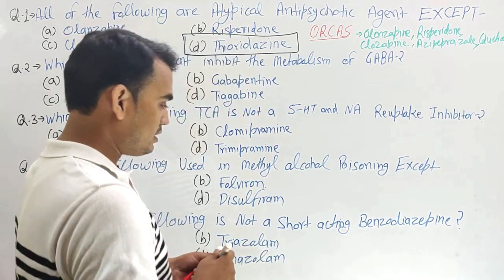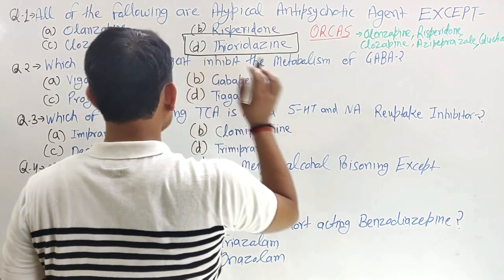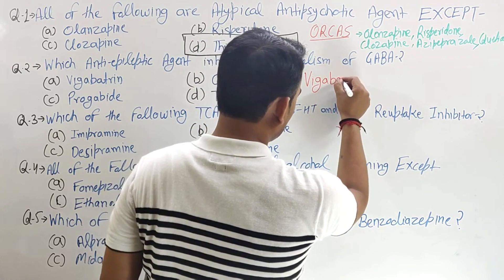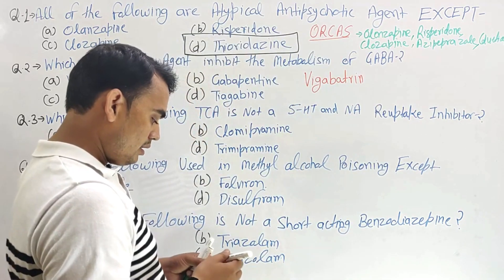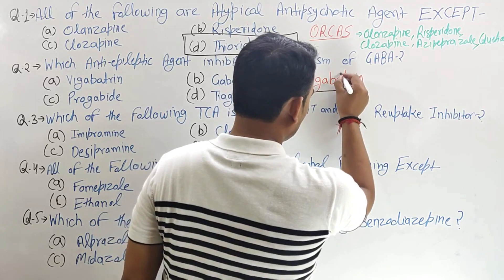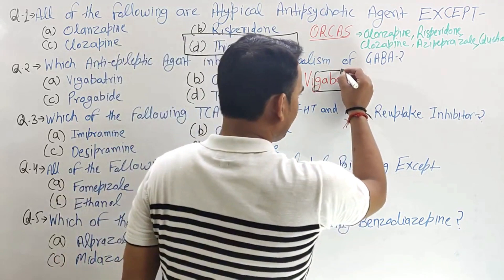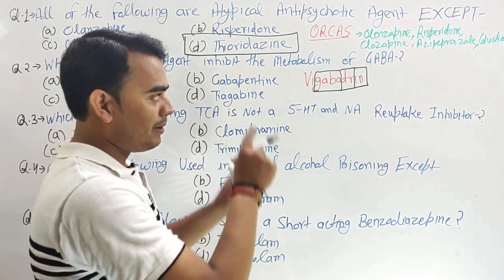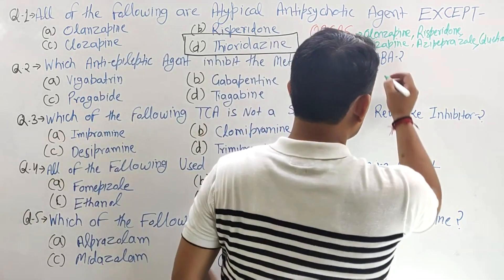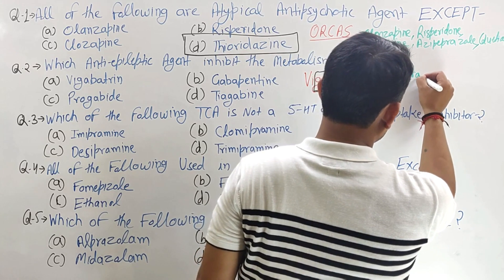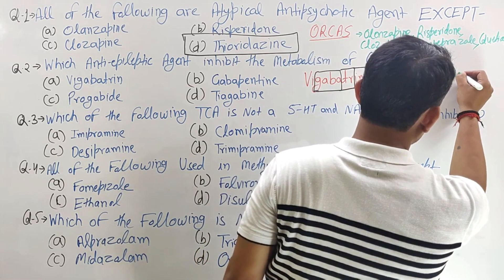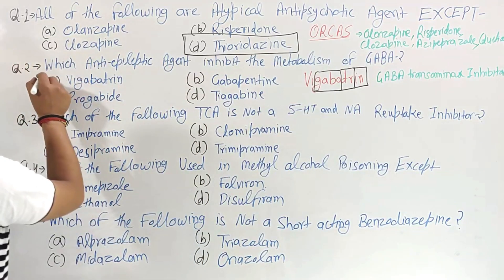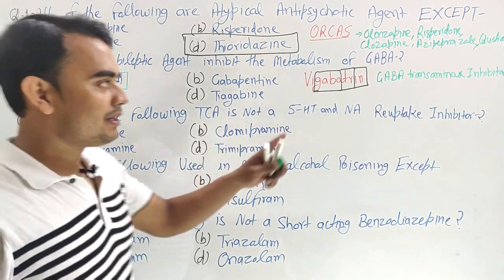We need to inhibit GABA transaminase. Just remember the word 'vigabatrin' — divide it: GABA, then PR for transaminase, and IN for inhibition. Means GABA transaminase inhibition. So vigabatrin is our right answer — vigabatrin mainly inhibits the GABA transaminase enzyme.